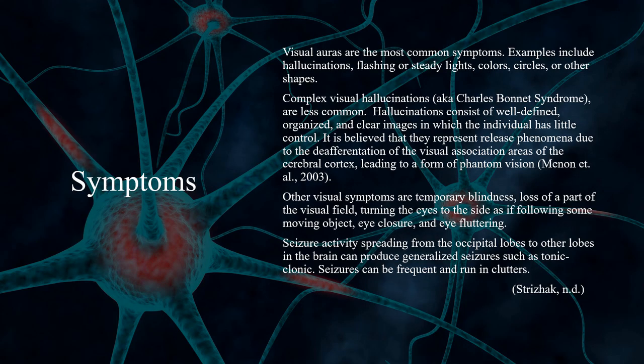Visual auras are the most common symptoms. Examples include hallucinations, flashing or steady lights, colors, circles, or other shapes. Complex visual hallucinations are less common. Hallucinations consist of well-defined, organized, and clear images in which the individual has little control.